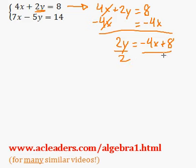Now I'm going to divide both sides by 2, and this cancels out with that. y equals negative 4x divided by 2, negative 2x, 8 divided by 2, 4. Now, y equals negative 2x plus 4.